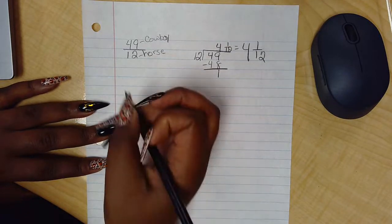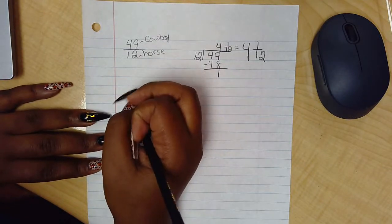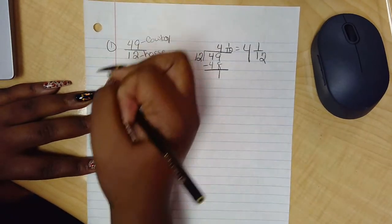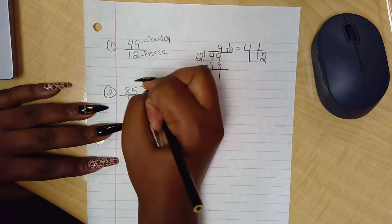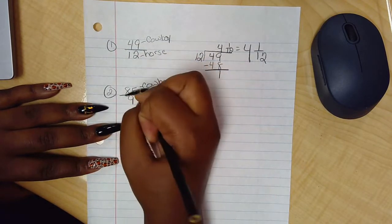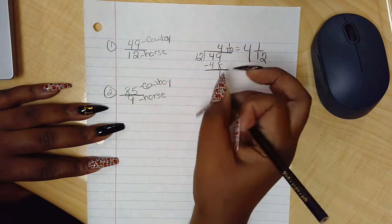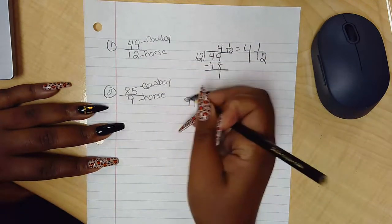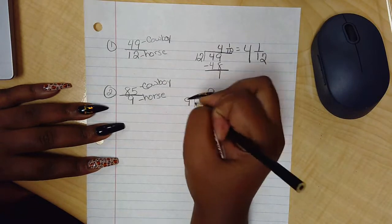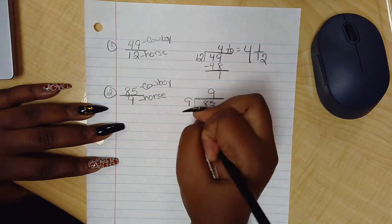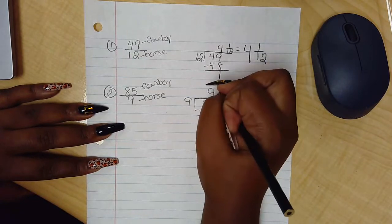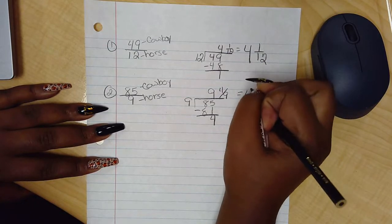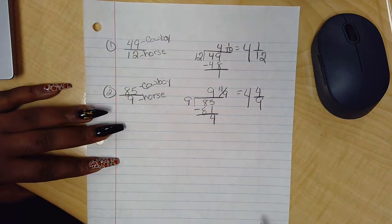Here's another example. Let's do 85 over 9. This is my cowboy, this is my horse. The cowboy goes inside the house, the horse stays out. I know 9 times 9 is 81. I'll put my 9 here. 9 times 9 is 81. I'm going to subtract. My 4 becomes my numerator and the 9 becomes my denominator, so it's 9 and 4/9.